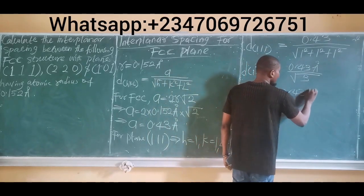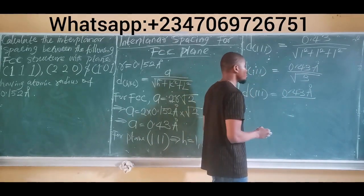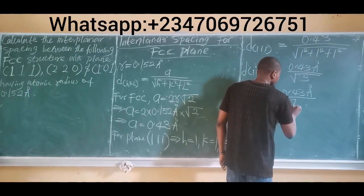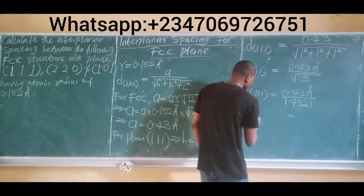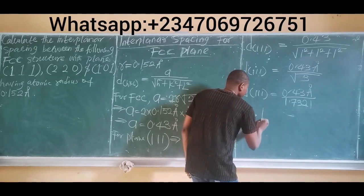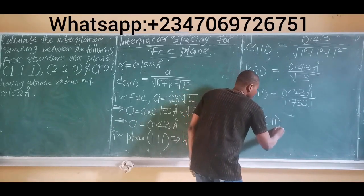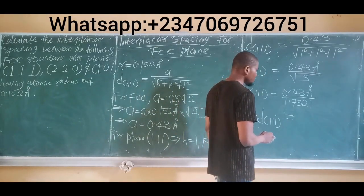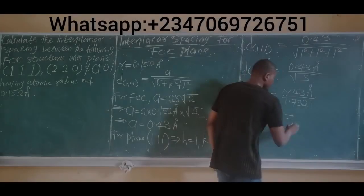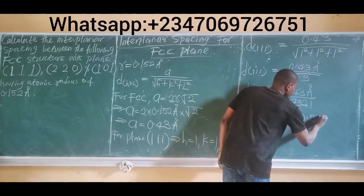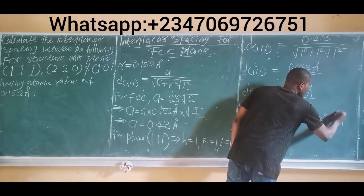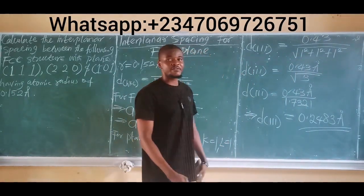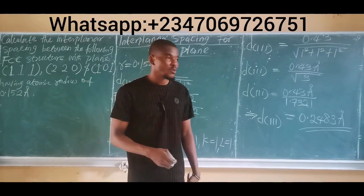The interplanar spacing for the (1,1,1) plane is equal to 0.43 divided by 1.7321, which gives us approximately 0.248 Angstrom units. So this becomes the interplanar spacing for FCC plane (1,1,1).